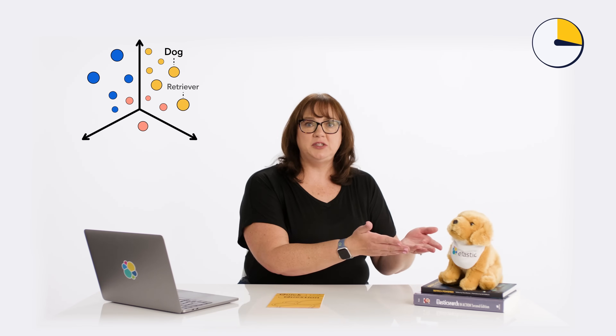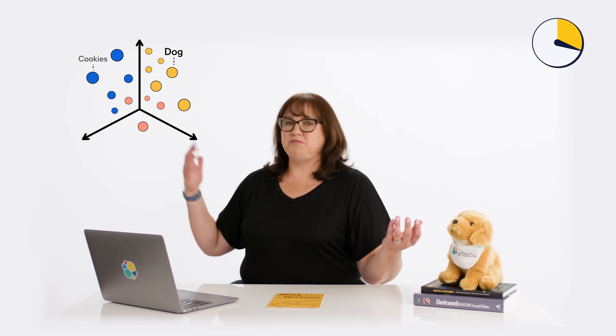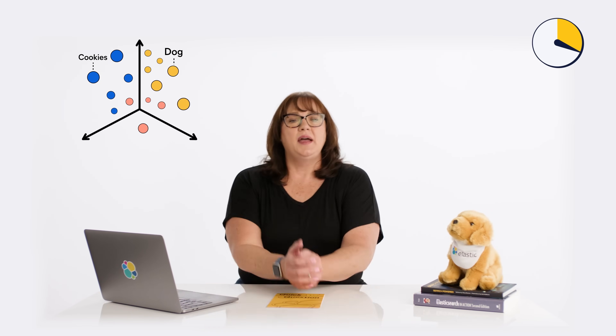They're stored in a graph where similar objects are closer together than non-similar objects. So a dog and a retriever might be closer together than say dog and cookies. We explore that graph when we search and we return similar items without needing an exact match.